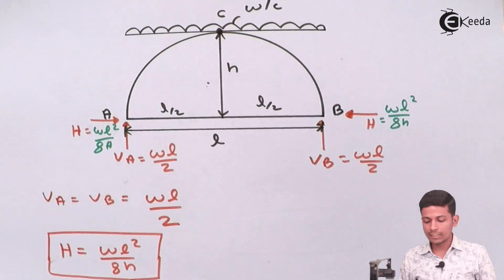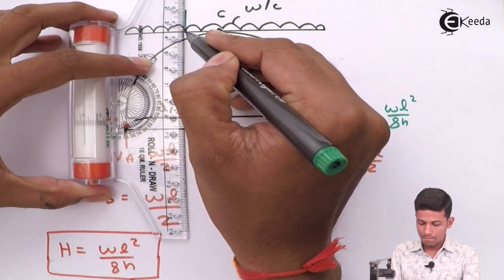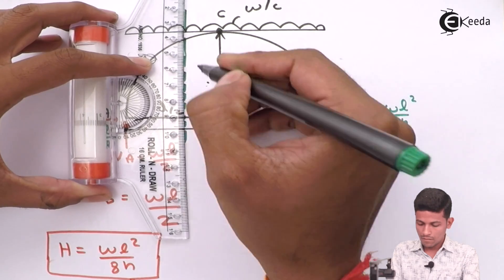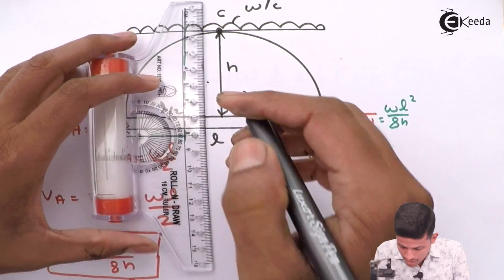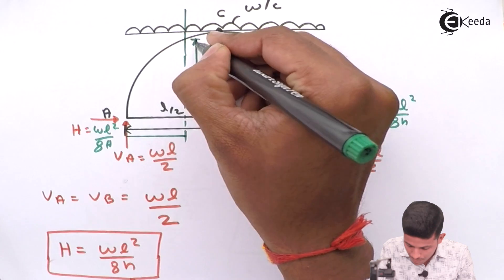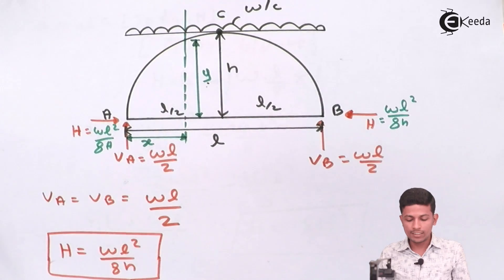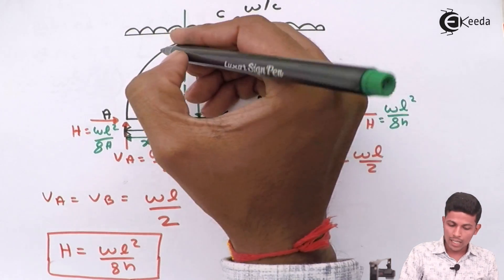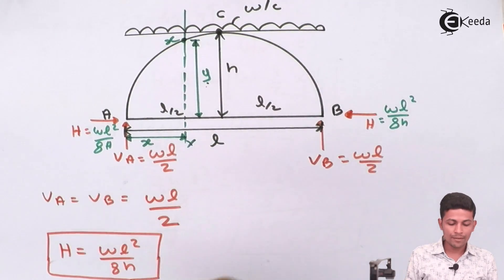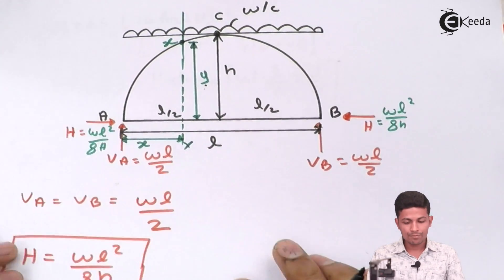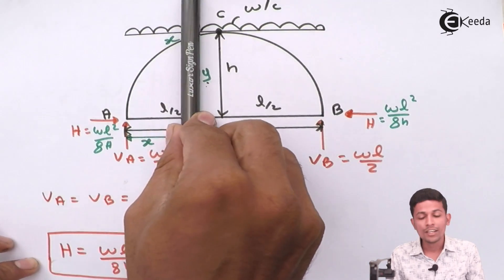Now we have to prove that bending moment at every section is zero. We take a general section XX at a distance X from A and height Y. We consider part XA and apply the sign convention: sagging is positive, hogging is negative.